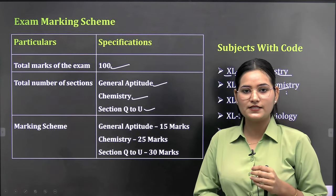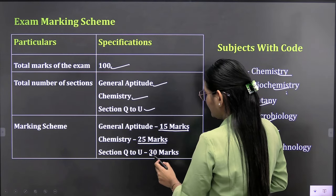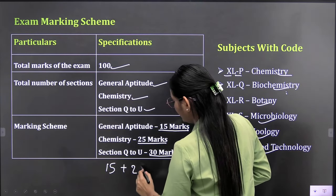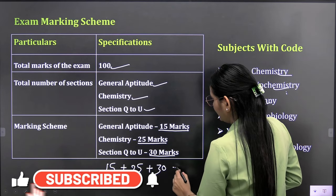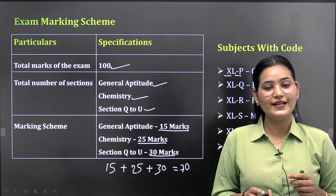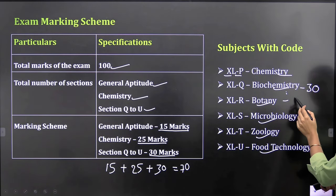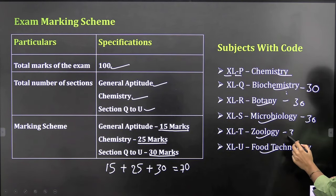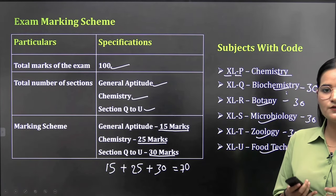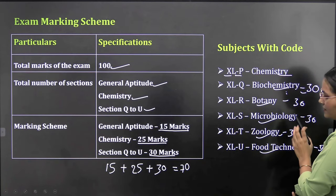If you talk about marks distribution, general aptitude will be total of 15 marks, chemistry 25, and the subjective section will be 30 marks. So the total is 15 plus 25 plus 30 equals 70, but the question paper is 100 marks. This is the beauty of life science examination. Each of the five subjects is 30 marks. You have to choose two subjects. It's totally up to you what you want to choose. You can choose biochemistry, botany, microbiology, zoology, or food technology. You choose two subjects of 30-30 marks.